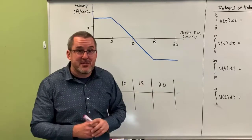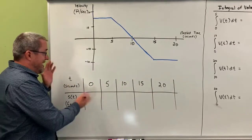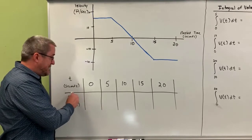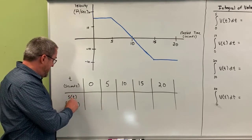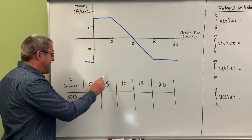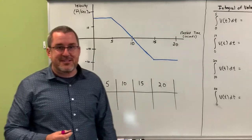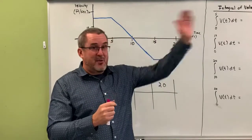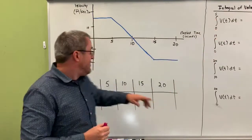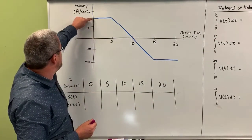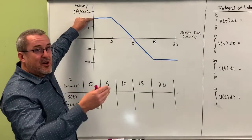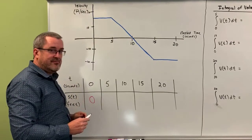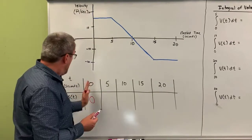What we'd like to explore first is this: in this chart, let's figure out the train's position in feet in each of these five-second increments. This is the train's position starting at when we first notice it. We're going to say the train's position initially is zero — where it is right now, zero.